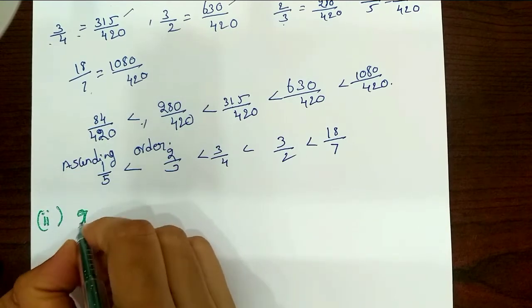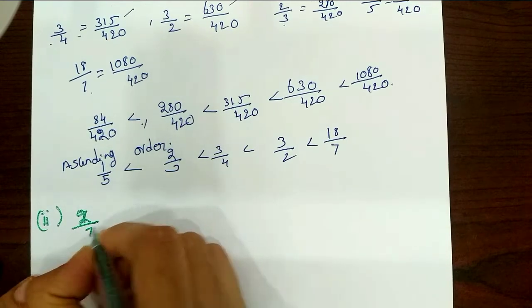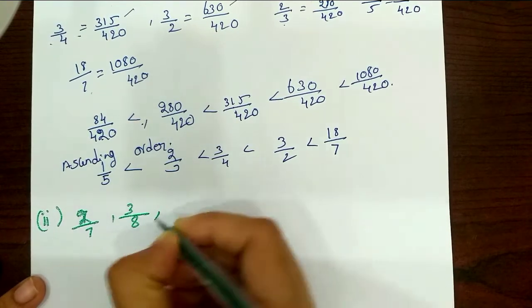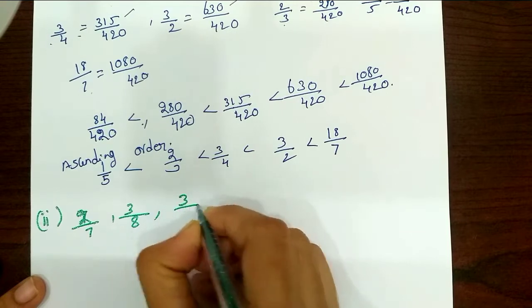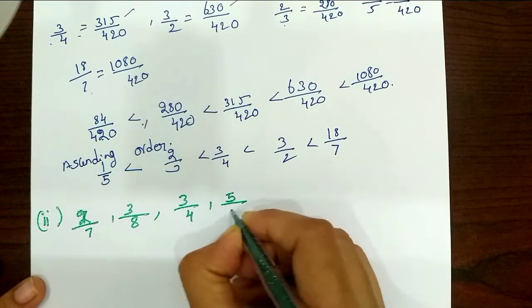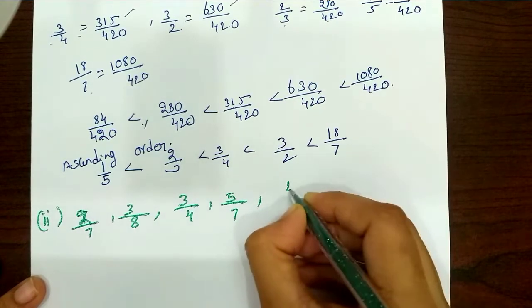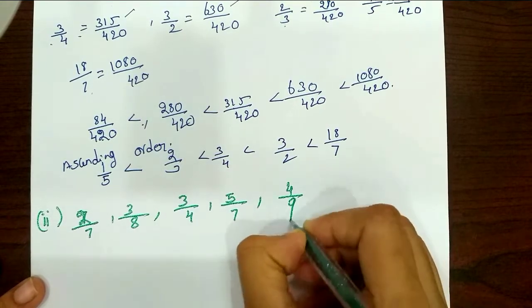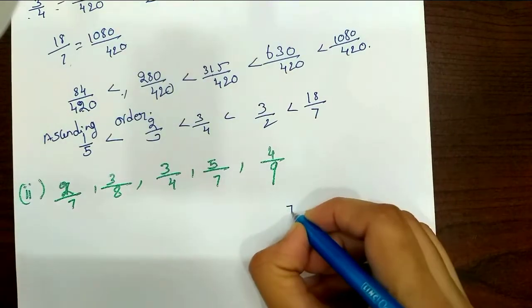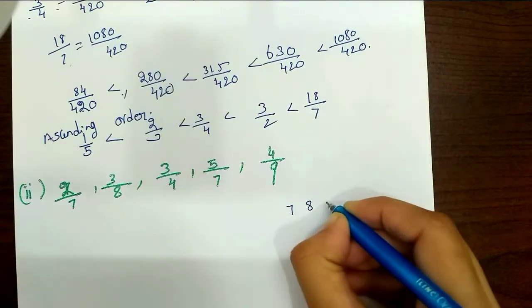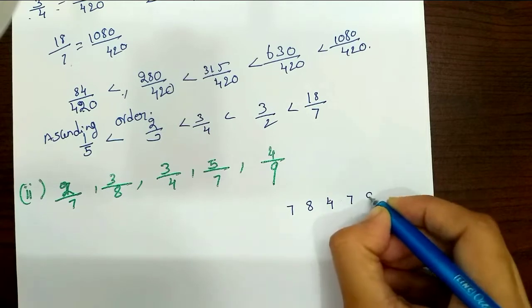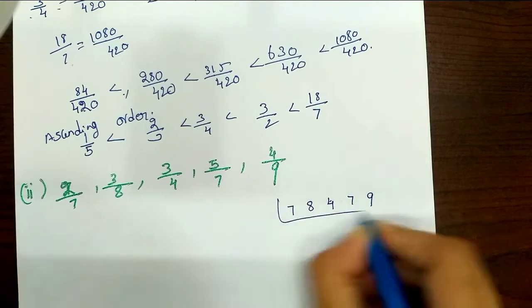Next, the second set of fractions: 2 by 7, 3 by 8, 3 by 4, 5 by 7, and 4 by 9. We need to find the LCM of the denominators: 7, 8, 4, 7, 9.